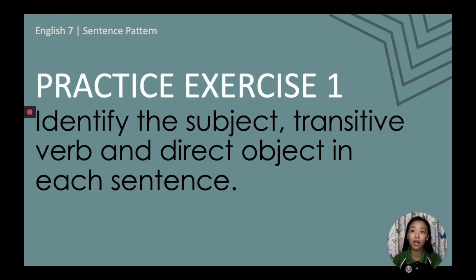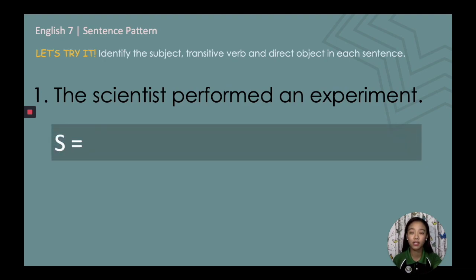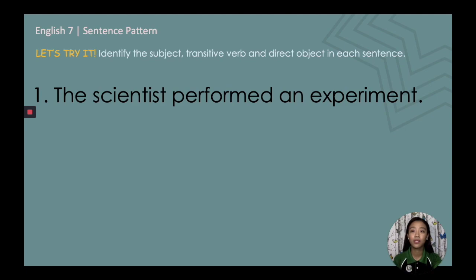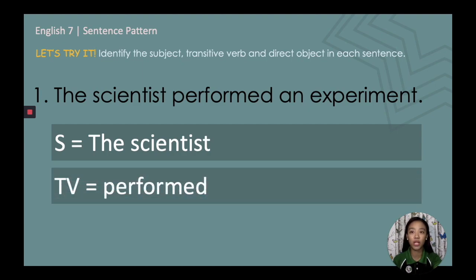It is now your turn to identify the subject, transitive verb, and direct object in each sentence. Pause the video as you try to answer each item. You may write your answers on a sheet of paper. Number one: 'The scientist performed an experiment.' The subject is 'the scientist.' The transitive verb is 'performed.' And the direct object is 'an experiment.'